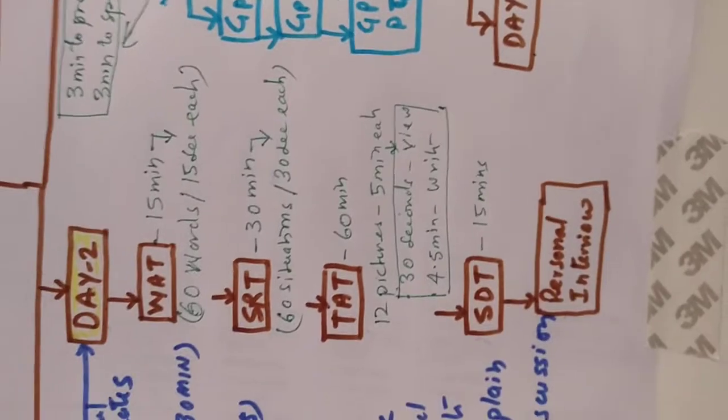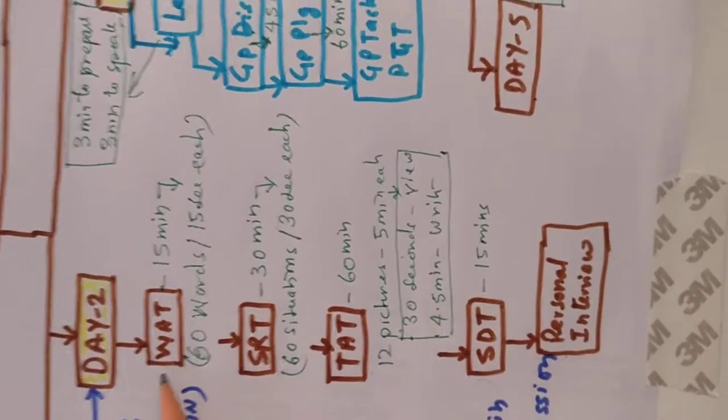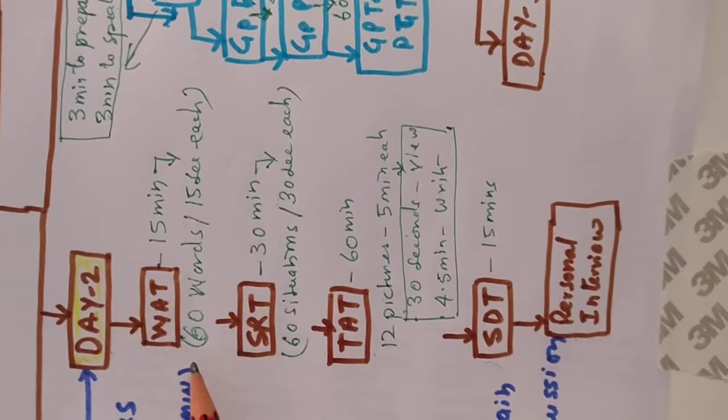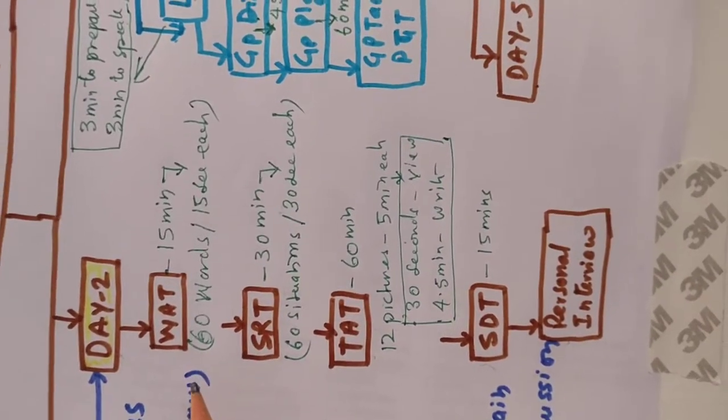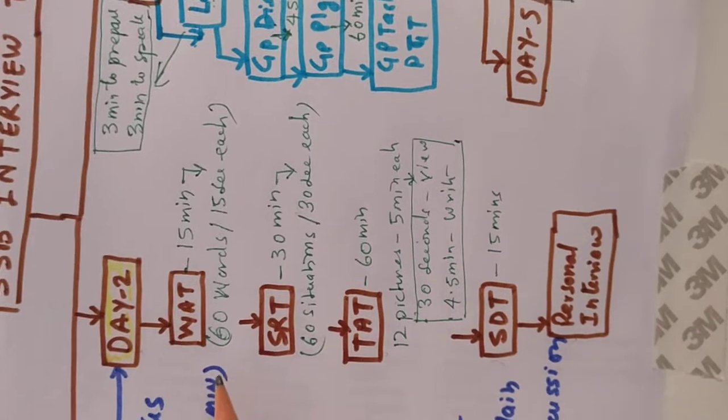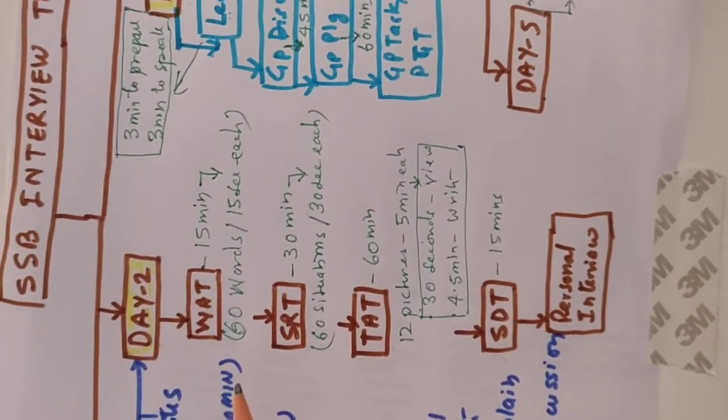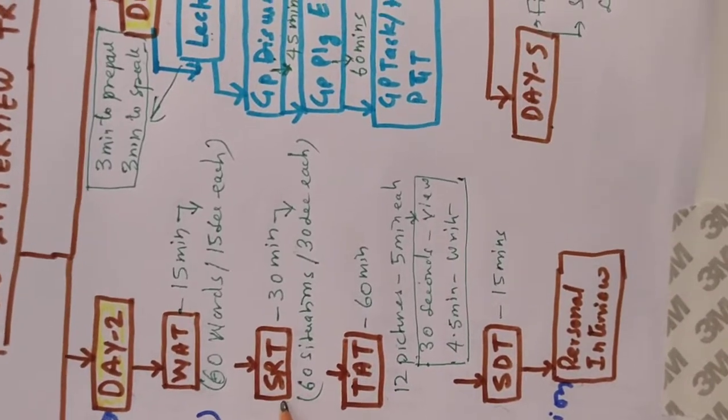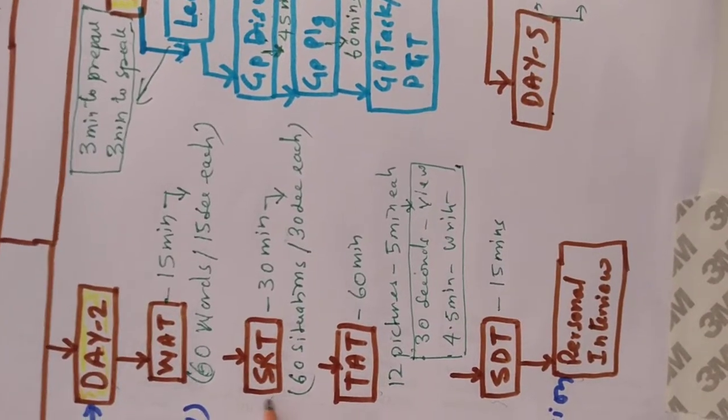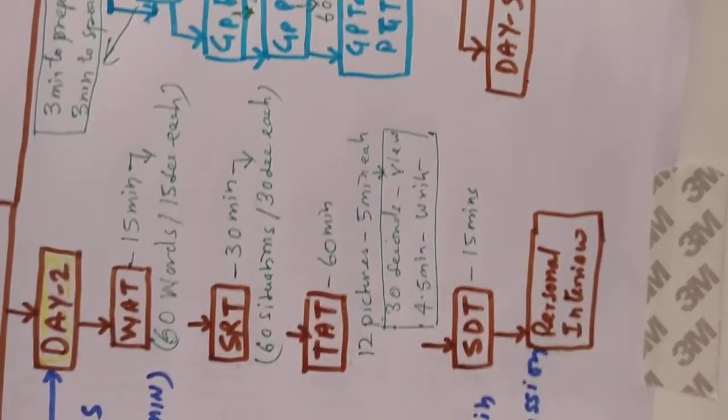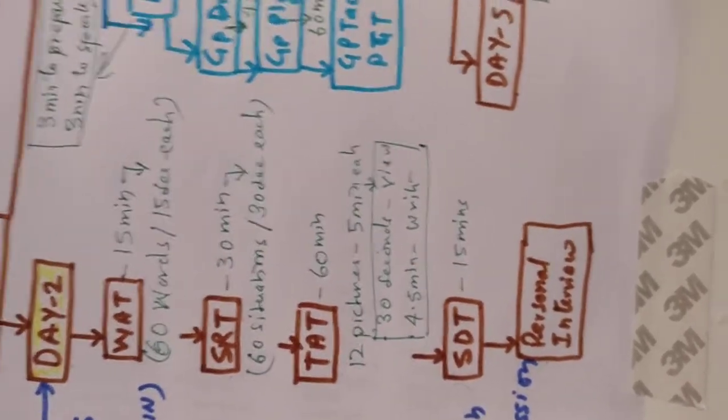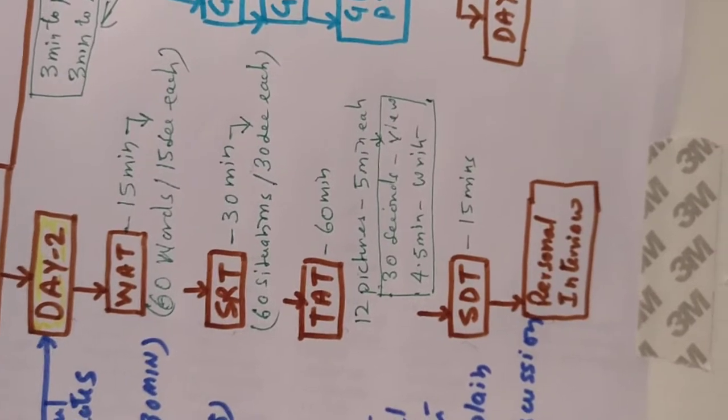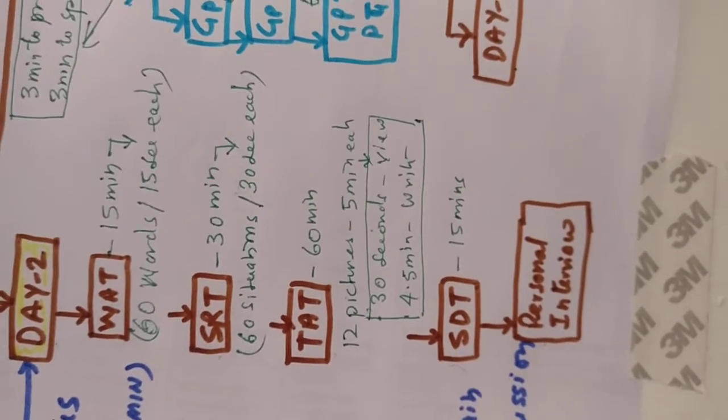So in WAT test you get 15 minutes time. In this, 60 words are shown one by one and you have to write a sentence about that word. You get 15 seconds per word. SRT is 30 minutes test where you are shown 60 situations for 30 seconds each.